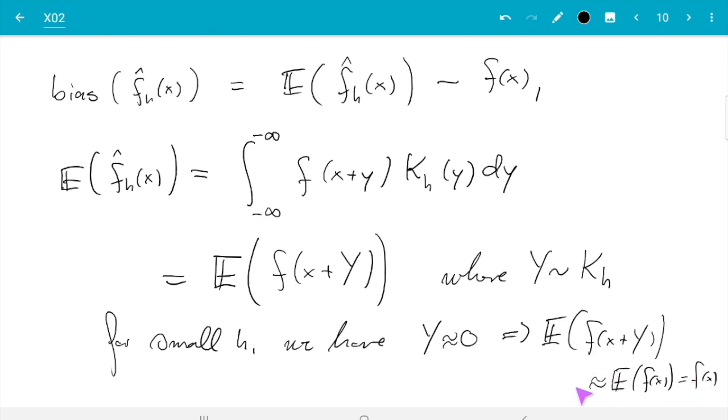Now the interesting information is of course hidden in the approximately equal sign. So what I want to do here is I want to look a bit closer. What does it actually mean? And that depends on the behavior of f around x.